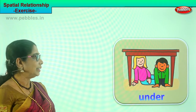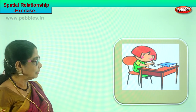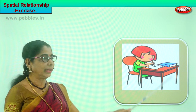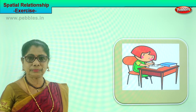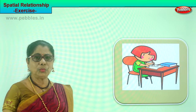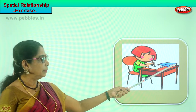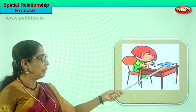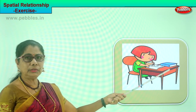Let's look at another picture. What is the little child doing? Where are the books? She is writing. The books are on the table, and she is doing her homework, placing the book on the table.